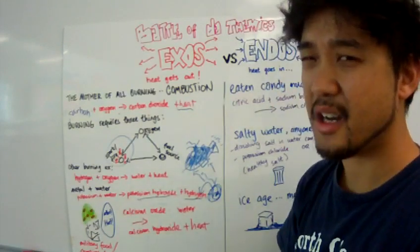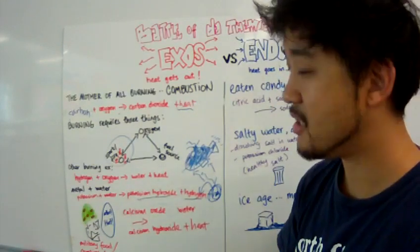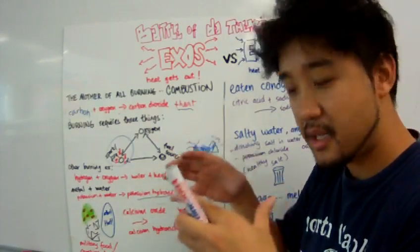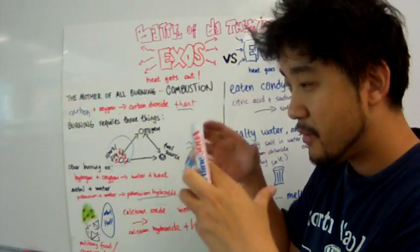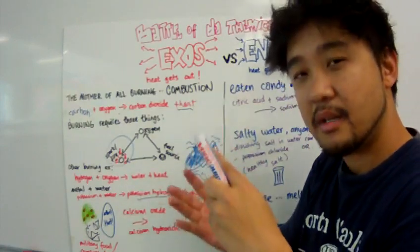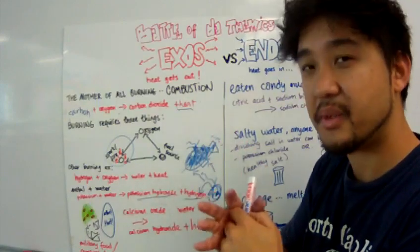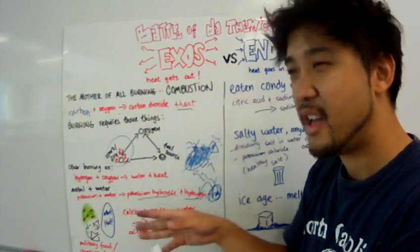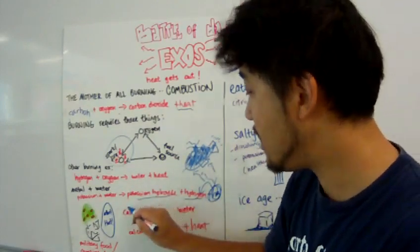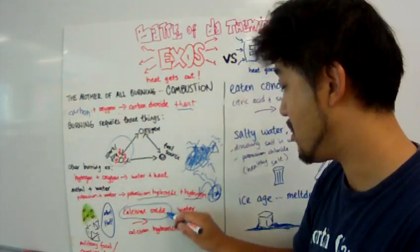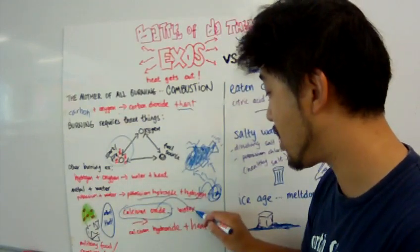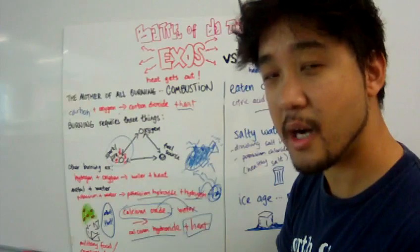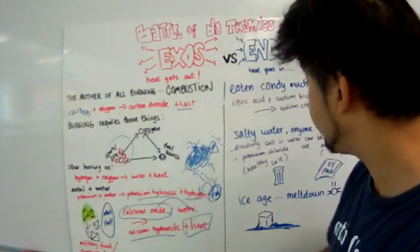And finally, last example of an exothermic process is camping food or military packed food. You guys may have seen this, but packed food contains a vessel that when you destroy one of the protective layer, it will release a chemical that will mix with water and a reaction will occur. The inside of that vessel is calcium oxide. When you break that vessel, it's going to react with water and you're going to get calcium hydroxide and heat. That heat is going to warm up or heat up your food.